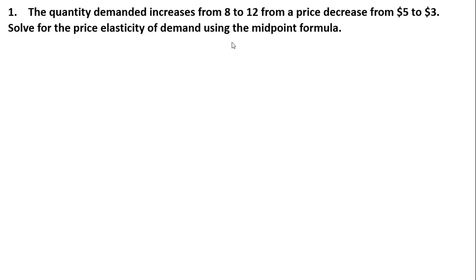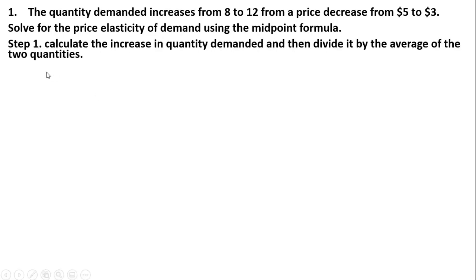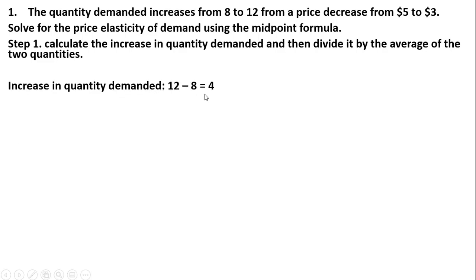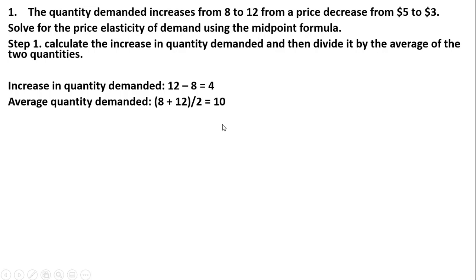I'm going to break it down into small pieces — this is a three-step process. Step one: we're going to calculate the increase in the quantity demanded. Quantity demanded goes from 8 to 12, so 12 minus 8 is 4. The average quantity demanded is 8 plus 12 equals 20, divided by 2, giving a simple average of 10. Then we divide 4 by 10, which equals 0.5. That's step one.